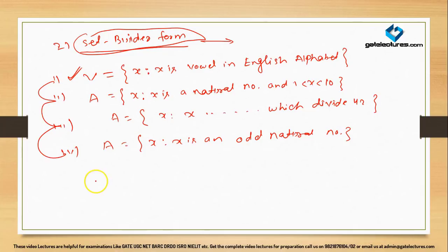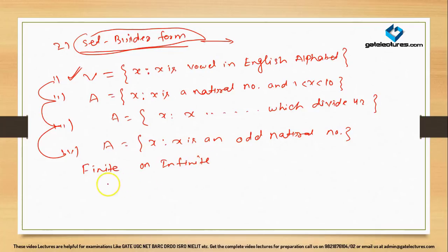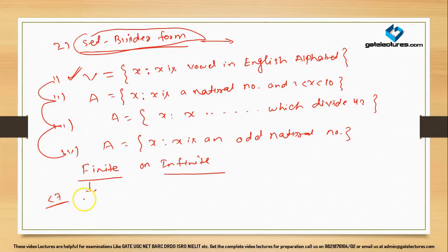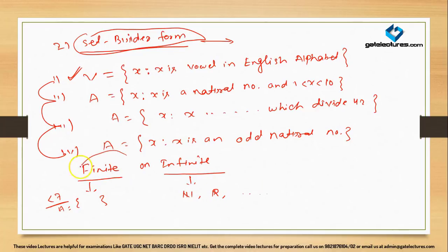We also conclude here that the collection of elements in a set can be either finite or infinite. A finite set example: the collection of positive integers less than 7 — it has a finite number of elements. An infinite set example: the set of all natural numbers, real numbers, positive odd numbers, and many more. So sets can be finite or infinite.